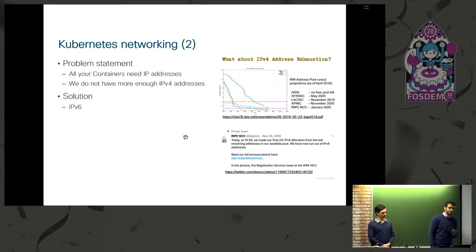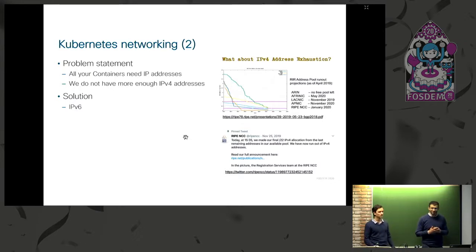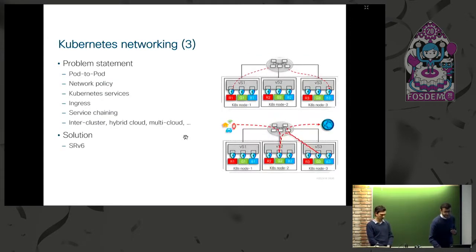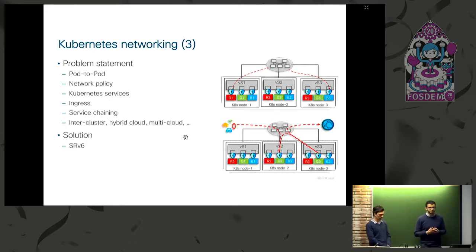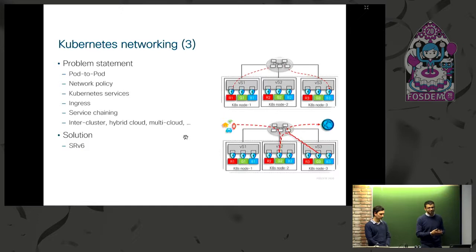The solution is to use IPv6. We're covering three main problem statements. The second problem: when we use IPv6 to address Kubernetes pods, we need to implement all Kubernetes use cases — pod-to-pod communication, network policy, services, service chaining, ingress, and inter-cluster communication. The question is: do we implement these the same way as IPv4, or should we think about them in a more IPv6-native way? From our point of view, SRV6 can provide a solution.